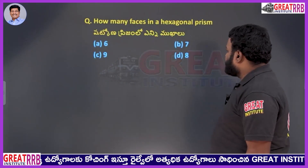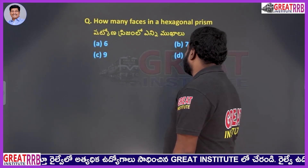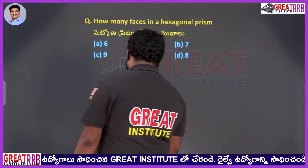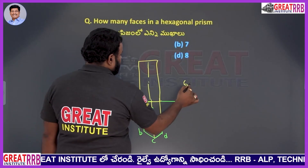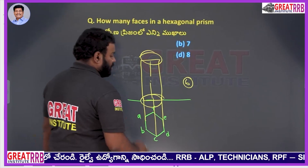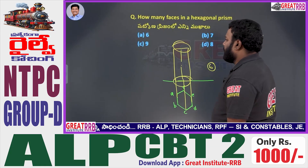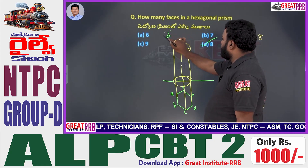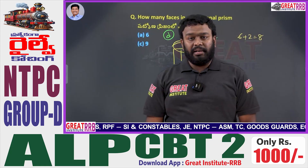How many faces are there in a hexagonal prism? A 6, B 7, C 9, D 8. A hexagon has six sides. A prism also has a top face and a bottom face, so six plus two gives eight faces. Option D, 8, will be the right answer for the given question.